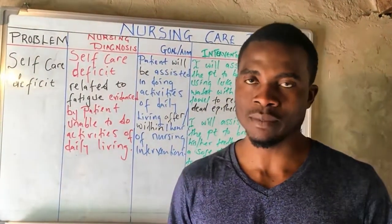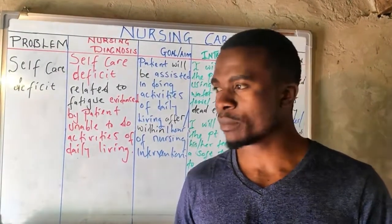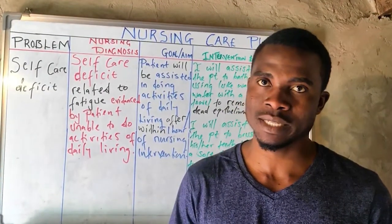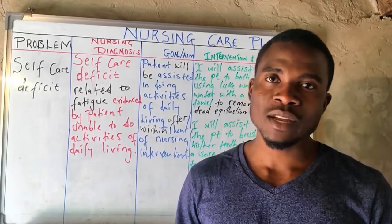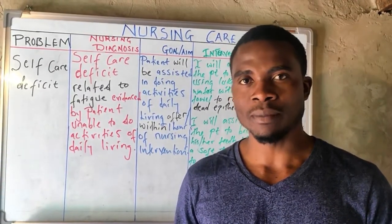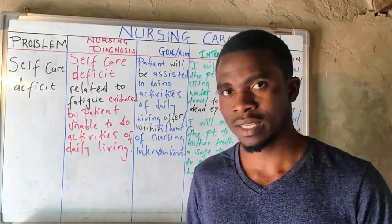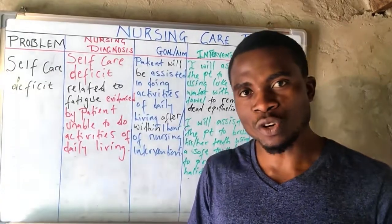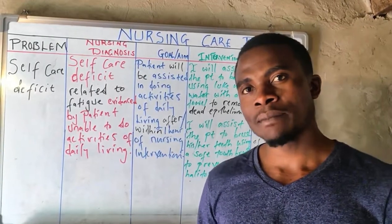Before you write the nursing care plan during the final exam, you have to understand that there are two types of problems. The first one is what we call an actual problem, and the second one is a potential problem. An actual problem is the initial or primary problem that the patient has, while the potential problem is the problem that the patient can have when you don't take care of the client in an appropriate manner.